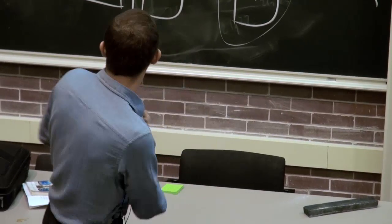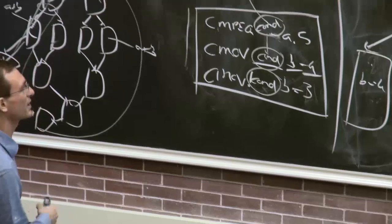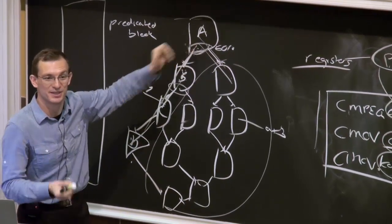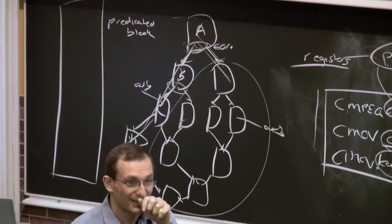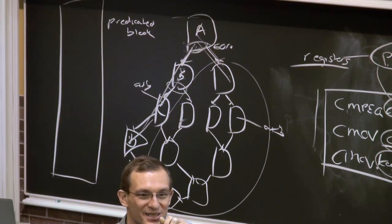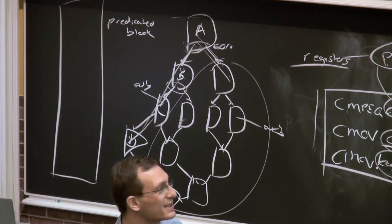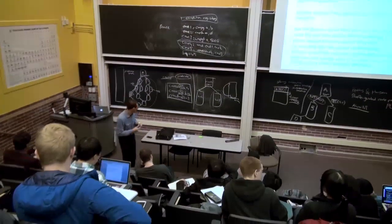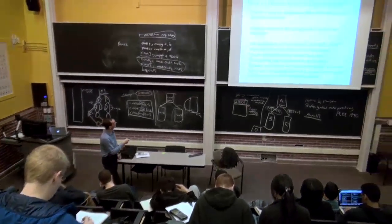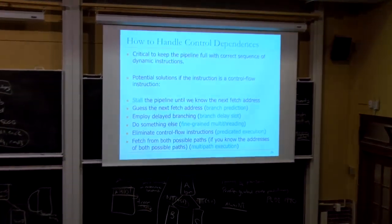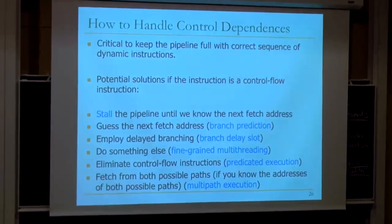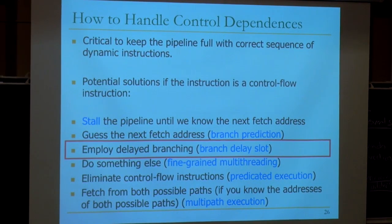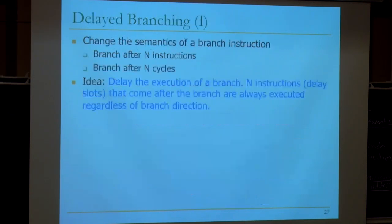Doing predicated execution for all branches is not a good idea because if you have an easy-to-predict branch, you can predict it easily. So far we've covered: stall the pipeline, guess the next fetch address, and eliminate control flow instructions. Let's now look at delayed branching — we've covered this before.